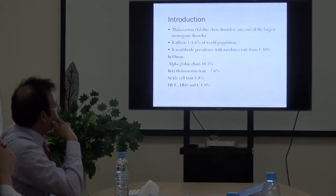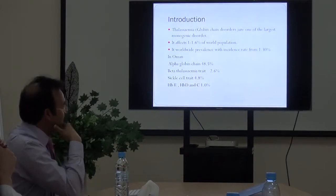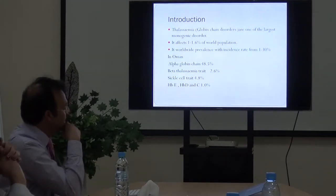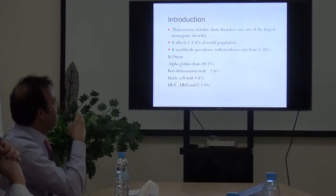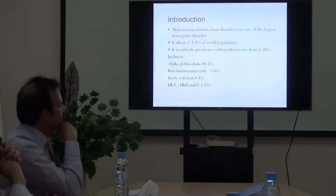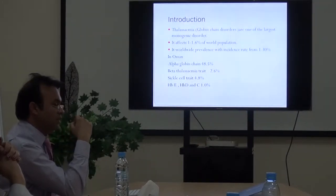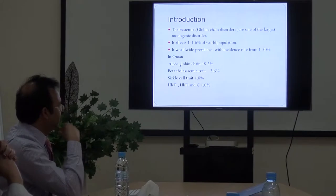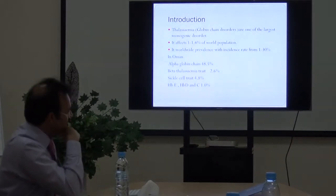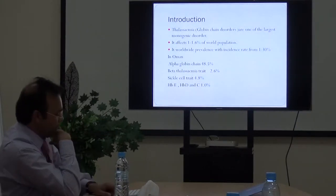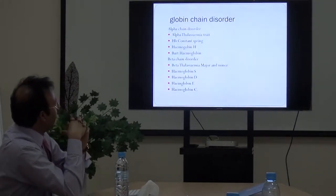A study published recently by Professor Salam Gandhi studied more than seven thousand neonatal samples. He found the incidence of alpha globin chain disorders is almost around fifty percent, while beta thalassemia trait is around two point six percent, sickle cell around four point eight percent, and the remaining hemoglobin variants around one percent.